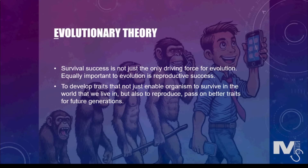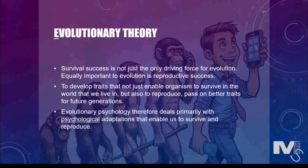An example of psychological adaptations to help us reproduce is in play in the dating example. Assuming a male and female are going out on a date, most females will be attracted to a male who has a sense of humour, will potentially be able to provide for the family, and will be able to physically protect her. This is evolutionary psychology in play. Evolutionary psychology therefore deals primarily with the psychological adaptations that help us survive and reproduce.